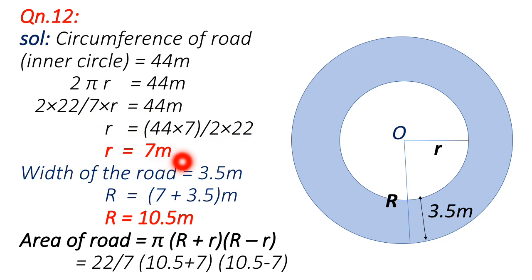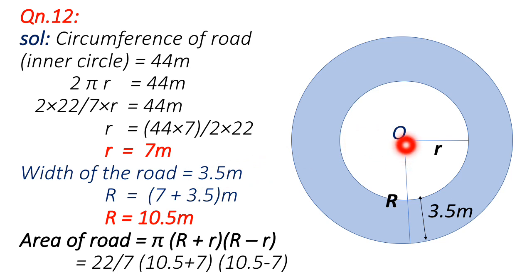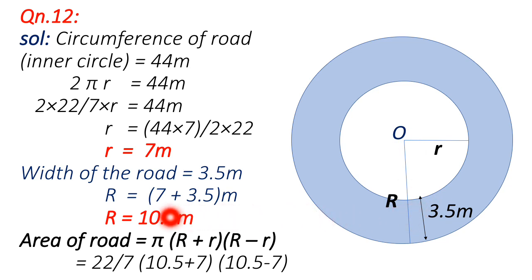We have the radius of the inner circle as 7 meters. The width of the road is given as 3.5 meters. So the radius of the bigger circle, capital R, equals 7 plus 3.5, that is 10.5 meters. The area of the road is the area enclosed between the two concentric circles with radii 7 and 10.5 meters.